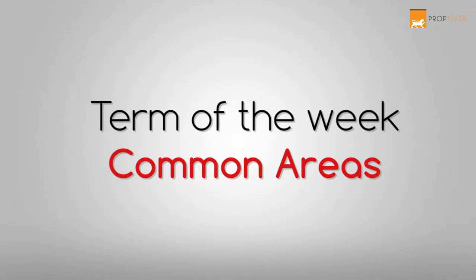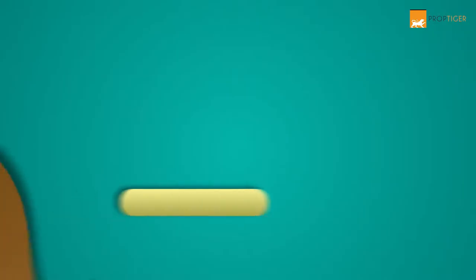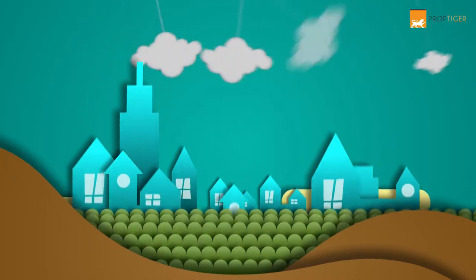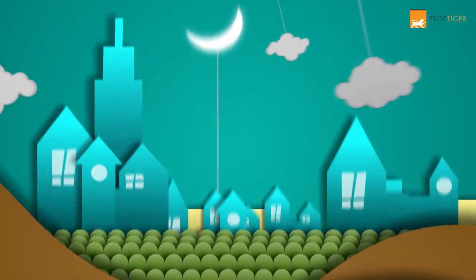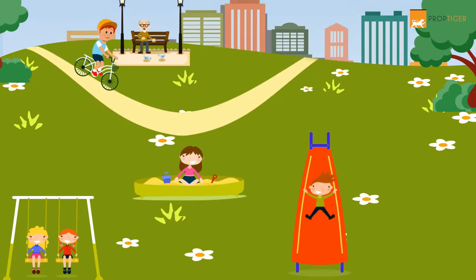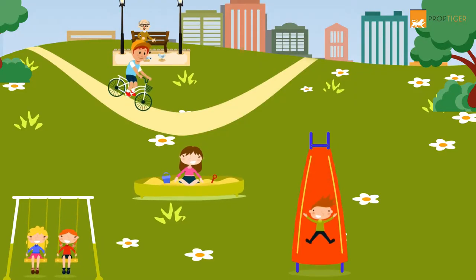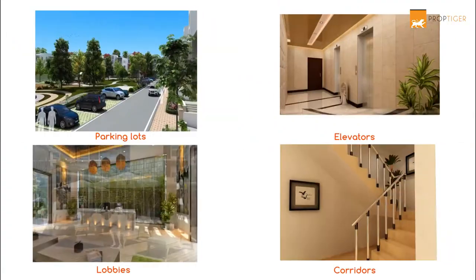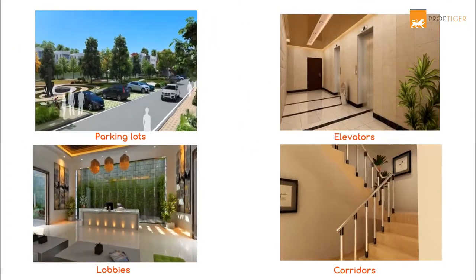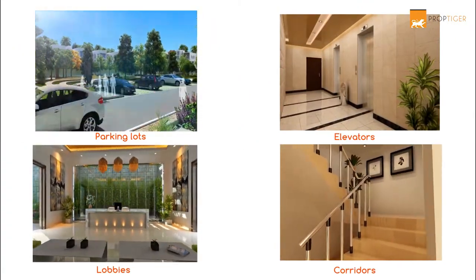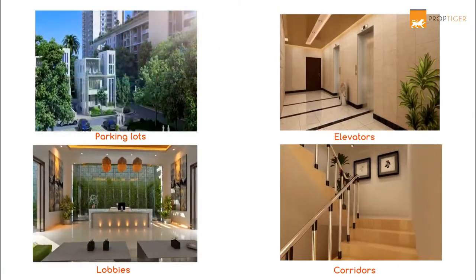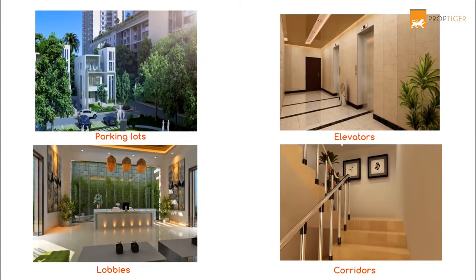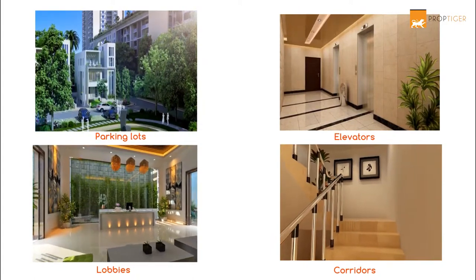Hi everyone, I'm here to talk about common areas. In a residential development, common areas are the facilities used by all apartment owners. Parking lots, elevators, lobbies and corridors are some examples of the common areas.